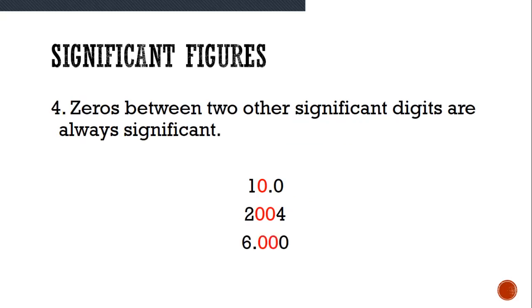Zeros between two other significant digits are always significant. In 10.03, 3 sig figs. In 2004, 4 sig figs. In 6.000, 4 sig figs.